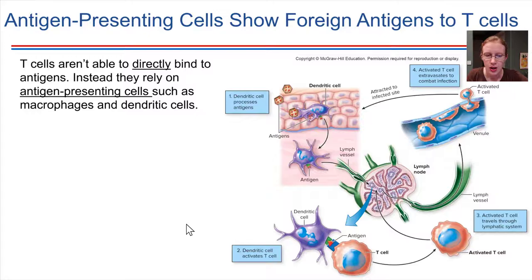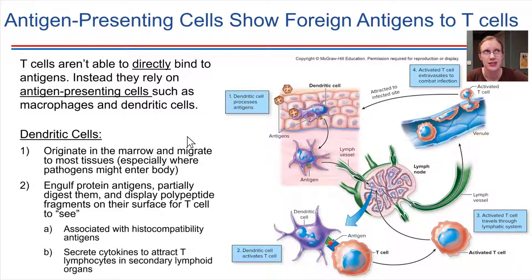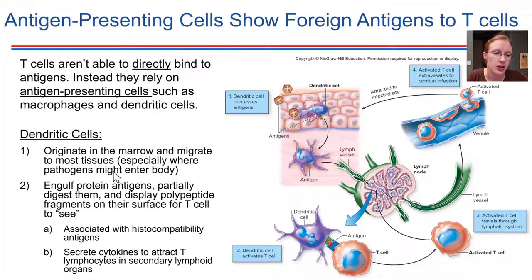Macrophages can do this, but dendritic cells are another cell type that can do this — and they are really specialized for it. Dendritic cells come from the bone marrow and migrate out into most tissues in the body, especially tissues exposed to pathogens, like the skin. Their whole job is essentially to engulf antigens, partially digest them, and display them on their surface, allowing T cells to recognize that a pathogen is present and become activated.